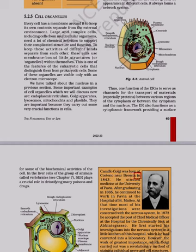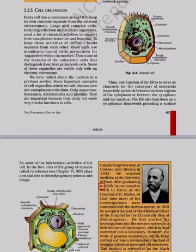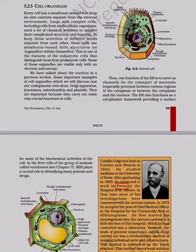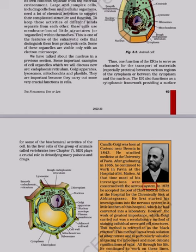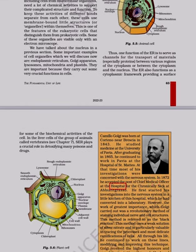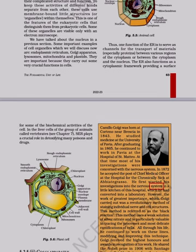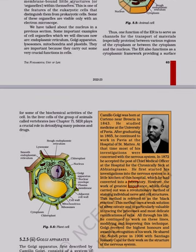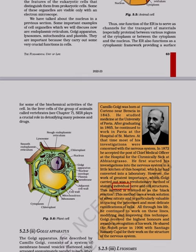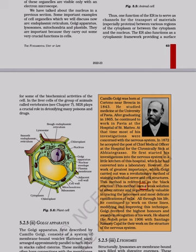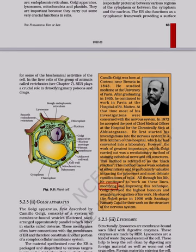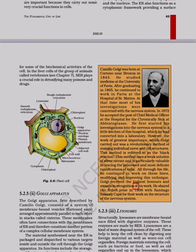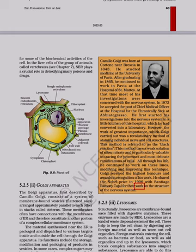Camillo Golgi was born at Cortino near Brescia in 1843. He studied medicine at the University of Pavia, and after graduating in 1865, he continued to work in Pavia at the hospital of St. Matteo. At that time most of his investigations were concerned with the nervous system. In 1872 he accepted the post of chief medical officer at the hospital for the chronically sick at Abbiategrasso. He first started his investigations into the nervous system in a little kitchen of this hospital, which he had converted into a laboratory. The work of greatest importance which Golgi carried out was a revolutionary method of staining individual nerve and cell structures, referred to as the black reaction. This method uses a weak solution of silver nitrate and is particularly valuable in tracing the processes and most delicate ramifications of cells. He shared the Nobel Prize in 1906 with Santiago Ramón y Cajal for their work on the structure of the nervous system.